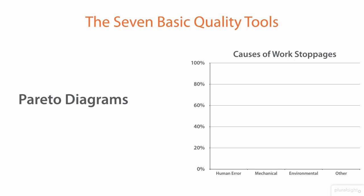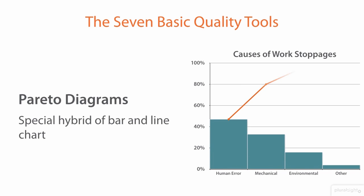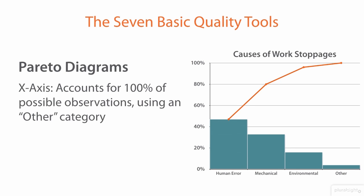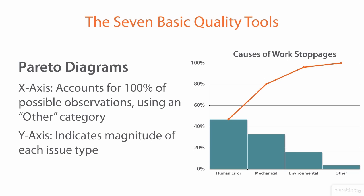The second quality tool we're going to discuss is Pareto Diagrams. This is a special hybrid of a bar and line chart. On the x-axis, we see a variety of different categories that account for 100% of our observations — in this case, causes for work stoppages on our project. Observations that don't fit a main category are lumped into an 'other' category, typically the smallest on the diagram. The y-axis indicates the magnitude of each issue type — what percent of issues can be attributed to each category.